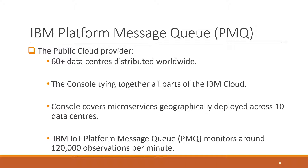The IBM Cloud is a public cloud providing services in more than 60 data centers distributed around the globe. The console is a product geographically deployed across 10 data centers. Microservices in the ecosystem depend on APIs from nearly every part of the platform, as well as the rest of IBM Cloud. The IBM IoT platform monitors around 120,000 observations per minute.